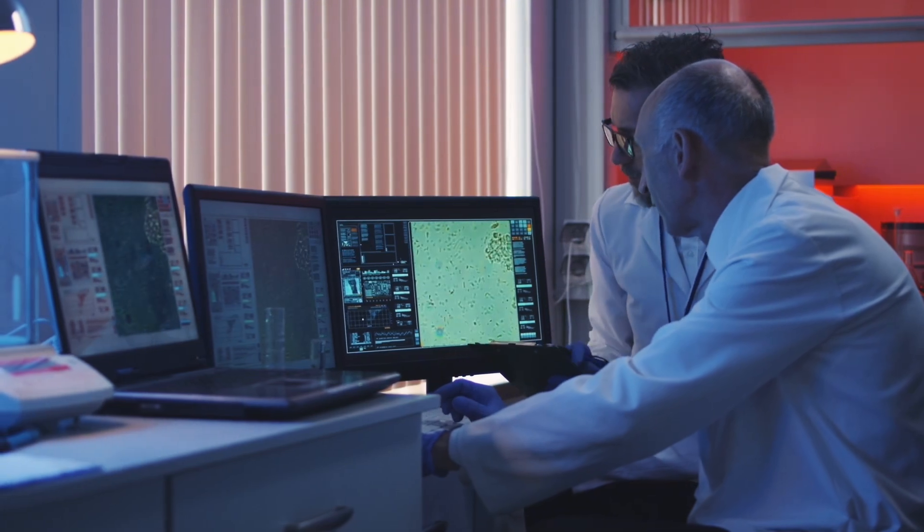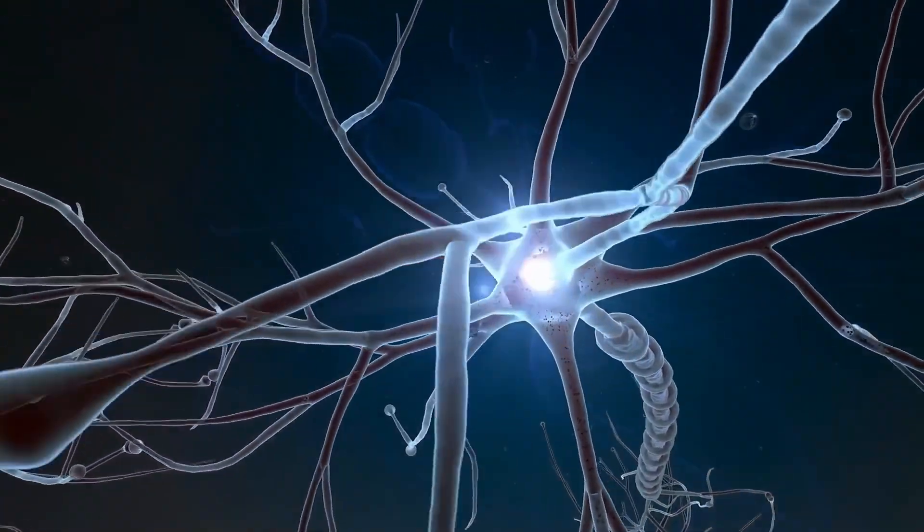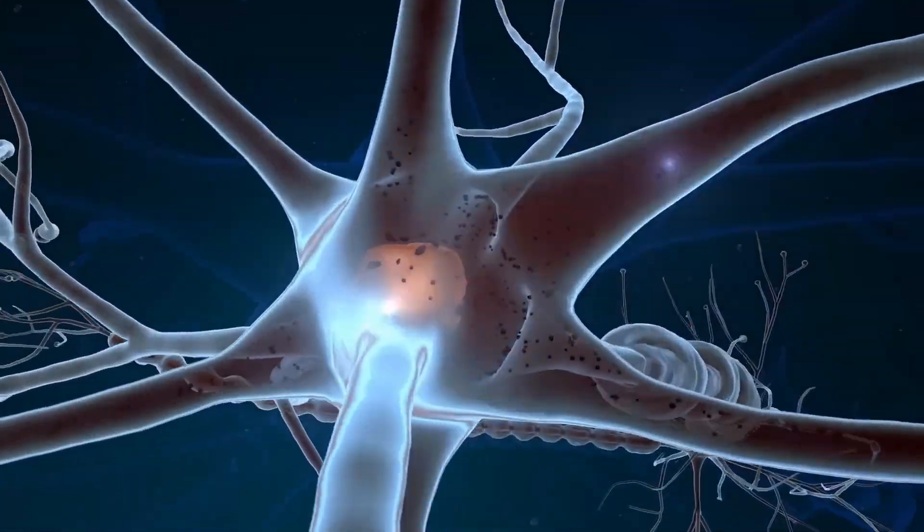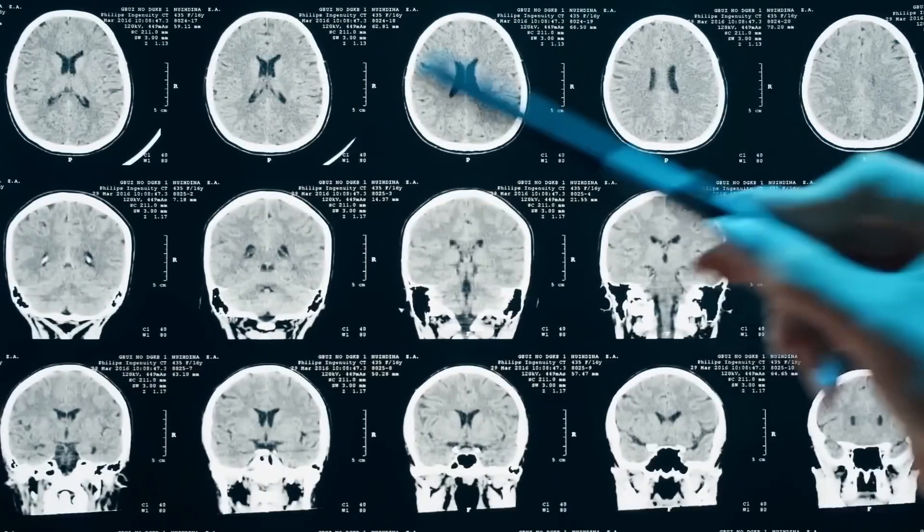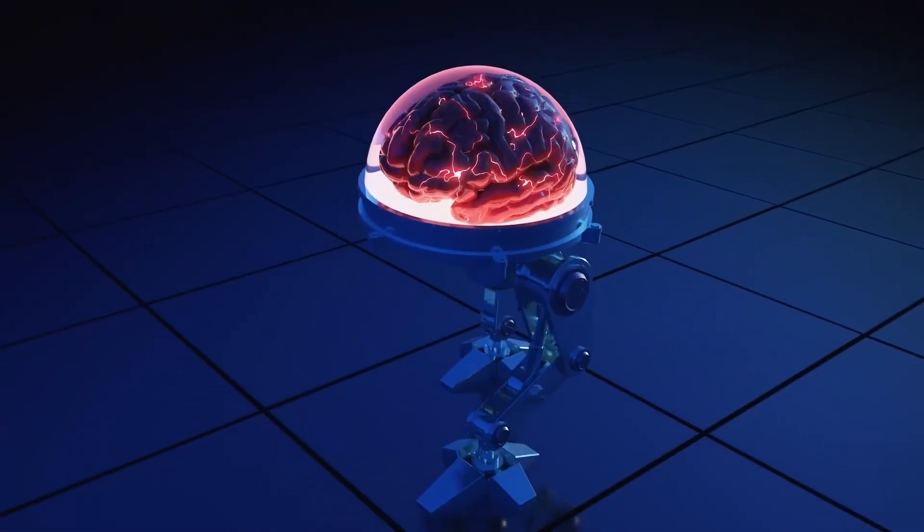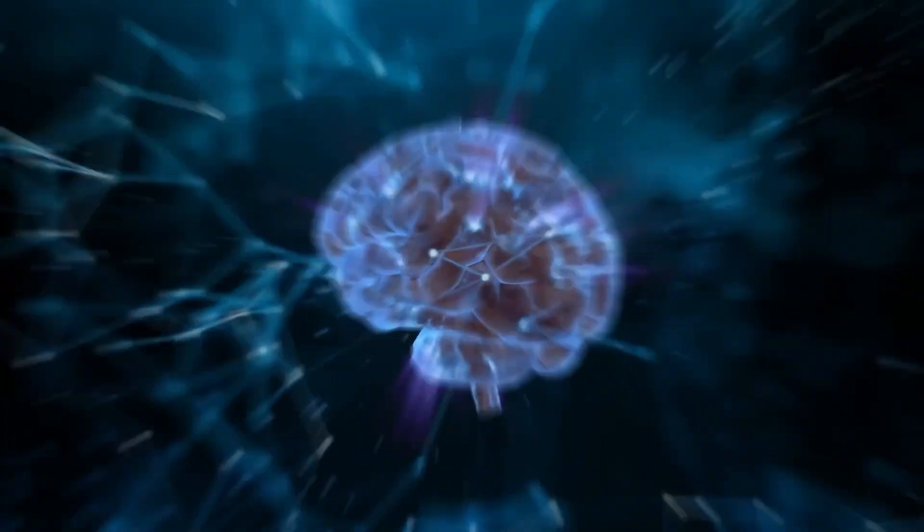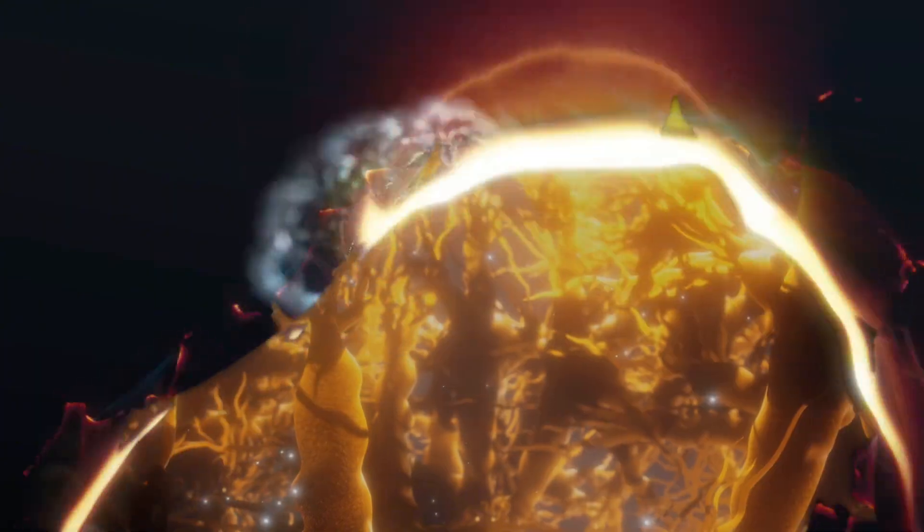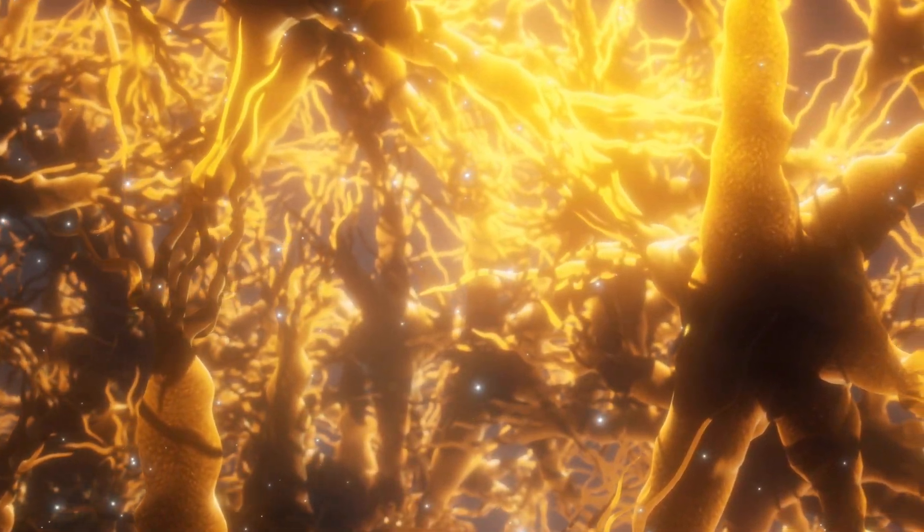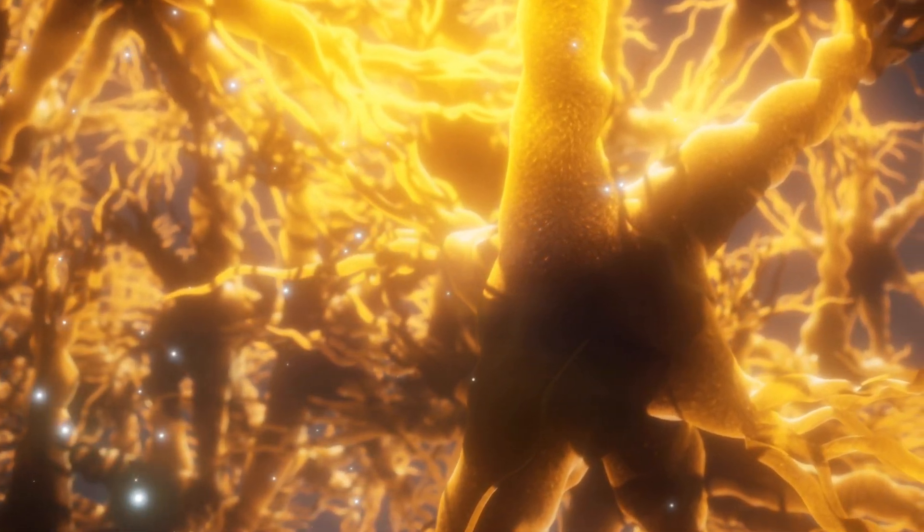It all starts with stem cells. Think of them as superheroes of the cell world. These little guys can transform into pretty much any cell in your body. It's like cellular shape-shifting. So, what these scientists did is take these stem cells and basically told them, today, you're going to be brain cells. And somehow, they managed to do it. But these scientists coaxed these stem cells into growing into this intricate network of brain cells, mimicking what you'd find in the human brain.